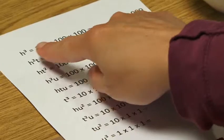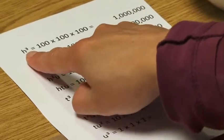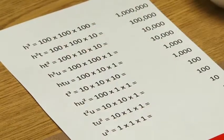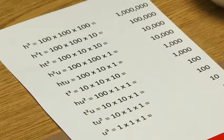We have H cubed, and that equals 100 times 100 times 100, which equals 1 million.